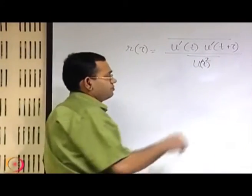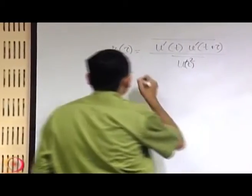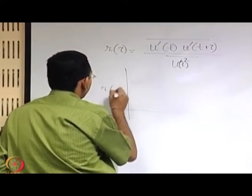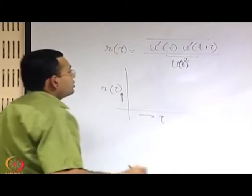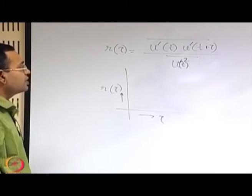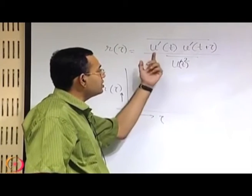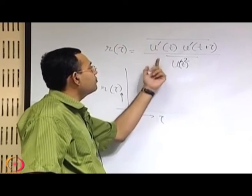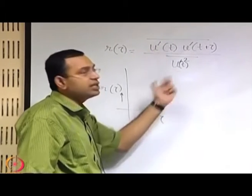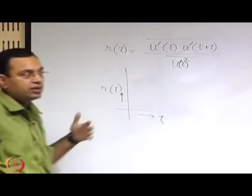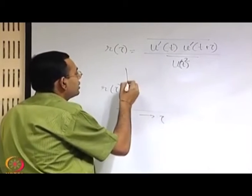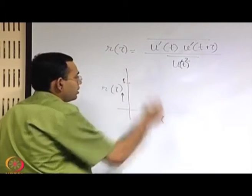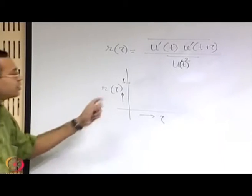If you have a plot of r(tau) versus tau, when tau is equal to 0, you are talking about the correlation of the random variable u prime at time t with itself at time t, and therefore they are exactly the same. It is clear from the expression that the correlation coefficient is 1 — so the autocorrelation coefficient is 1 at tau equal to 0.